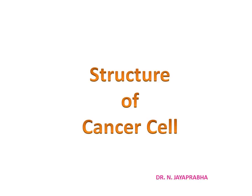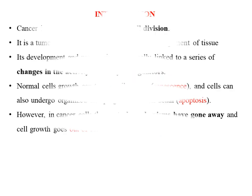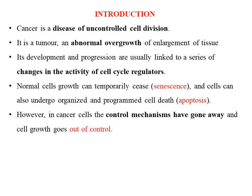Hi everyone. I am going to discuss about the structure of cancer cell. First of all we have to know what is cancer. Cancer is a disease of uncontrolled cell division. The term cancer is derived from the Latin word 'cancrum' which means the crab. Cancer is caused by uncontrolled cell division, where cancer cells divide rapidly, which leads to the overgrowth of the cells.